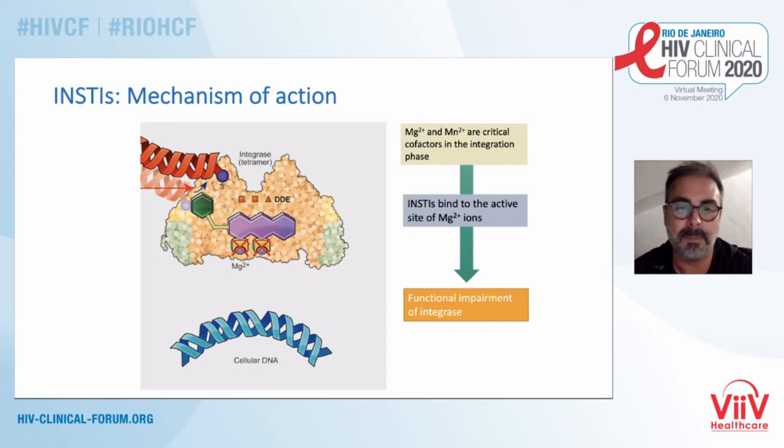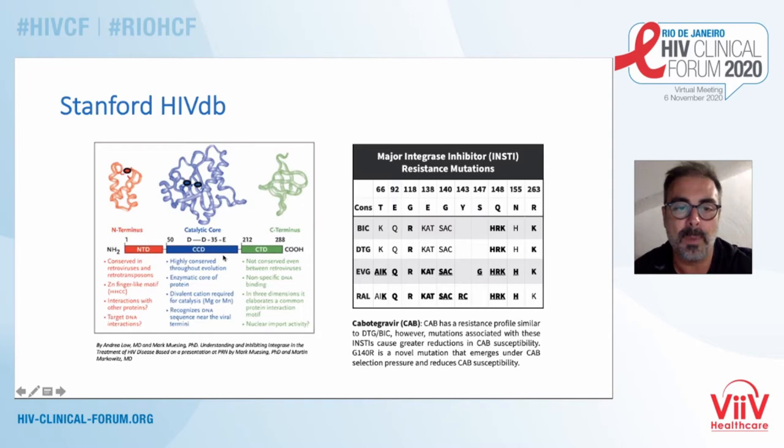Most resistance mutations occur in the catalytic core. On the right-hand side, you can see the main resistance mutations summarized for the different INSTIs, as compiled by the Stanford database. One key characteristic is that these mutations are shared among the different INSTIs.